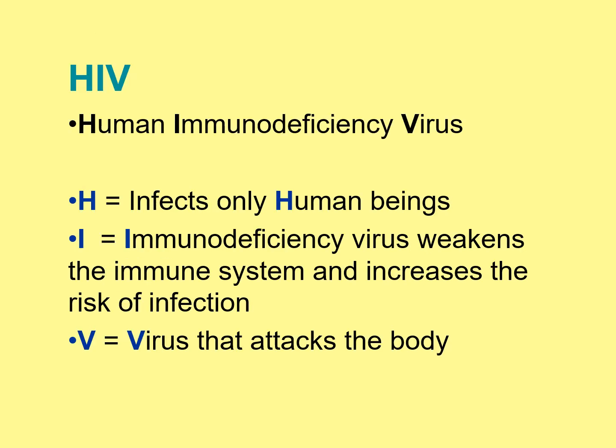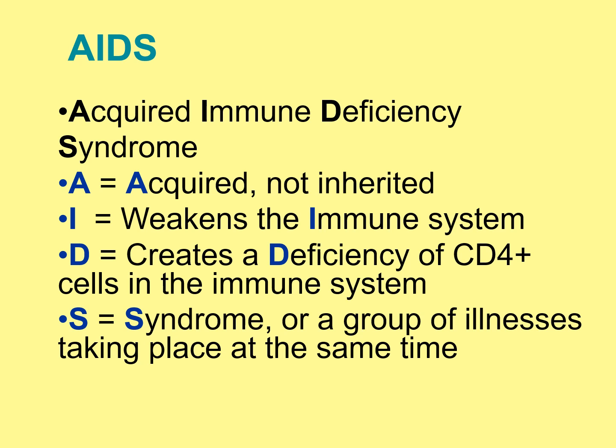HIV is a human immunodeficiency virus which affects only humans. It weakens the immune system and increases the risk of infection and virus that attacks the body. While AIDS, on the other hand, is an acquired immune deficiency syndrome which weakens the immune system, makes our body deficient with CD4-plus cells, and it's a syndrome or a group of illnesses that takes place at the same time.